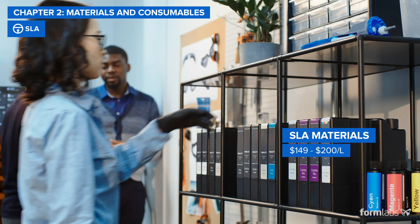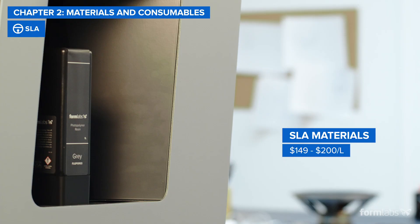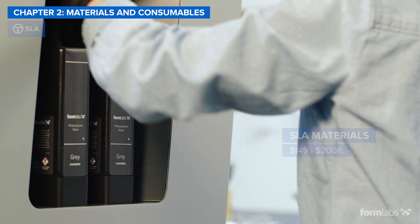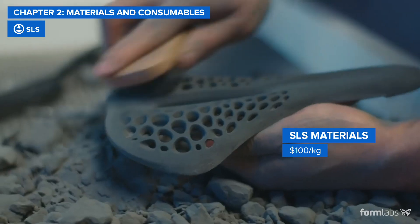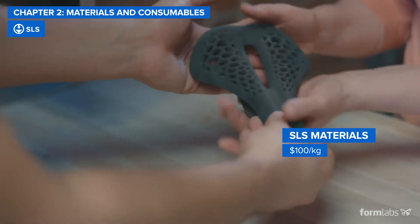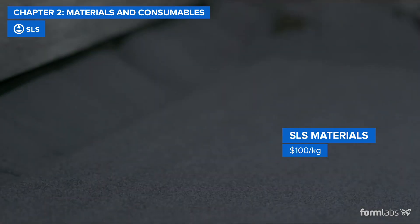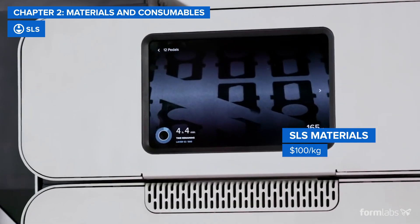SLA materials usually carry a slightly more premium price tag. SLS material costs are in between FDM and SLA, but because SLS 3D printing requires no support structures and unfused powder can be reused, material cost can be significantly lowered.